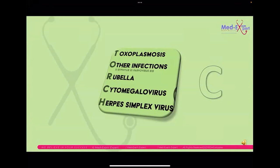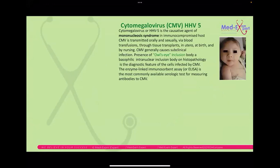Cytomegalovirus is caused by Human Herpesvirus 5. It is the causative agent of mononucleosis syndrome. Note that infectious mononucleosis — which is different — is caused by Epstein-Barr virus (Human Herpesvirus 4). CMV typically presents with owl-eye inclusion bodies on histopathology.